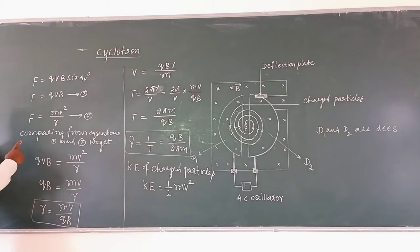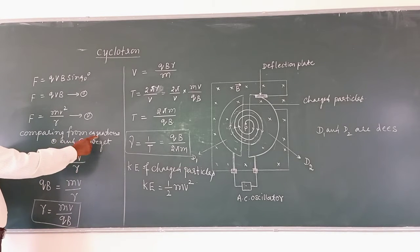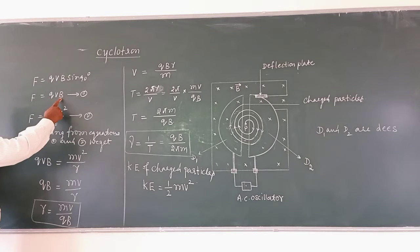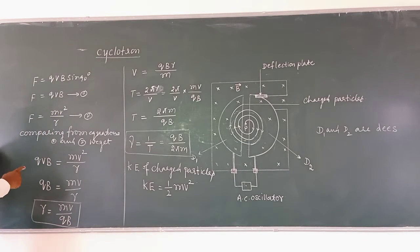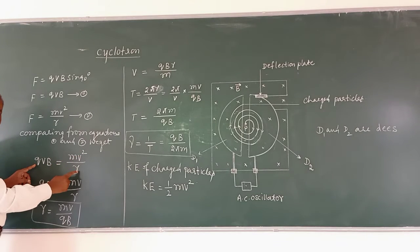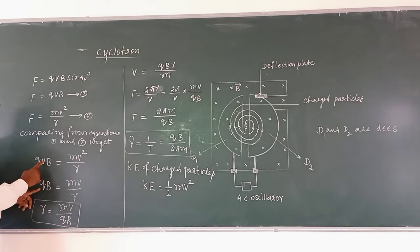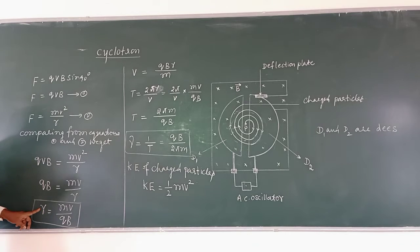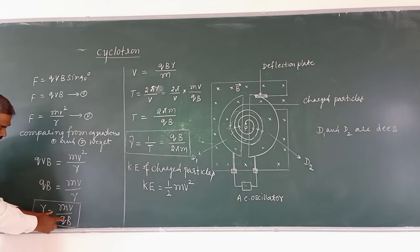Comparing equations 1 and 2: qvB = mv²/R. Cancelling v from both sides gives qB = mv/R. Therefore, the radius of the circular path is R = mv/qB.